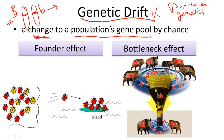Let's take a look at the two major examples of genetic drift. One is called the founder effect, and one is called the bottleneck effect. Let's start with the founder effect.